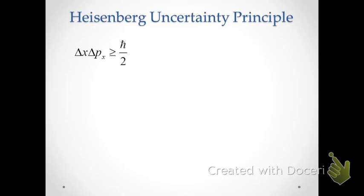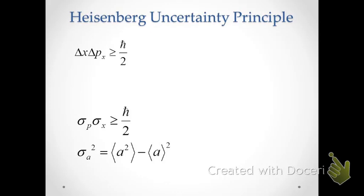Let's take a look at this a little more precisely. We've got this relationship that relates the uncertainty in position and the uncertainty in momentum — what we can know about position and momentum. To be more precise about the definitions of uncertainty, we'll replace delta x with sigma, which you'll recognize as a symbol for standard deviations. The standard deviation of momentum times the standard deviation for position must be greater than or equal to h-bar over 2.